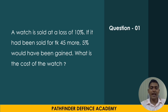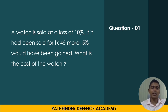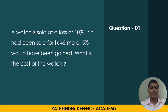So you can solve the math. A watch is sold at a loss of 10%. If it had been sold for 45 more, 5% would have been gained. Then what is the cost of the watch? That means 10% loss.